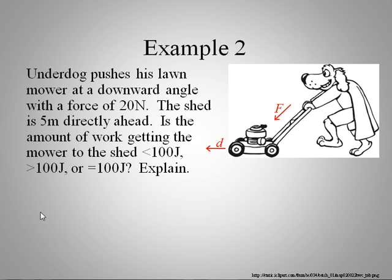Let's take an example where the force is not in the direction of the motion. Here we can see the dog mowing the lawn, pushing with a force of 20 newtons downward at this angle along the handle. The mower needs to go 5 meters straight ahead. The question is, is the amount of work getting to the shed less than, equal to, or greater than 100 joules? And we need to explain that. If you want to try this one, pause your video.